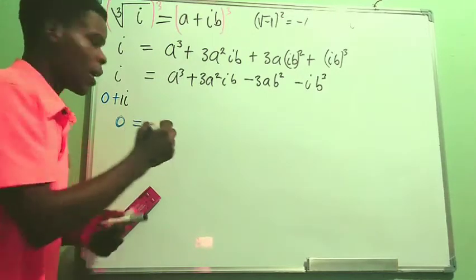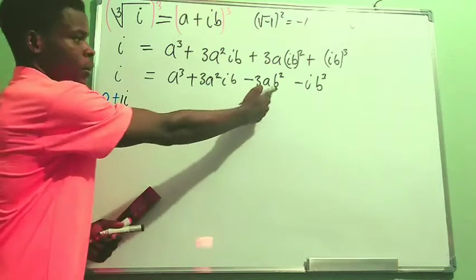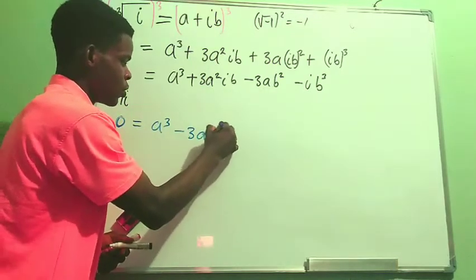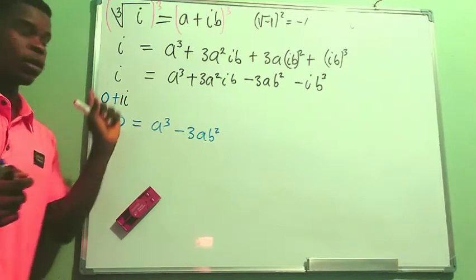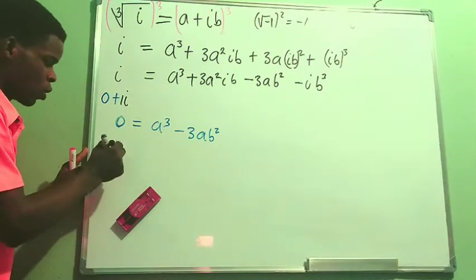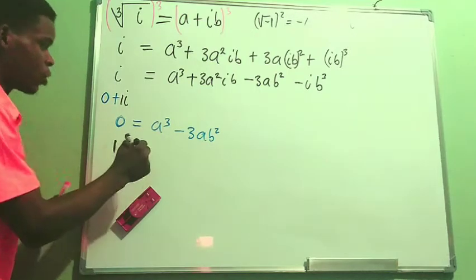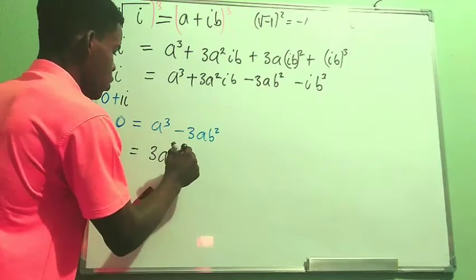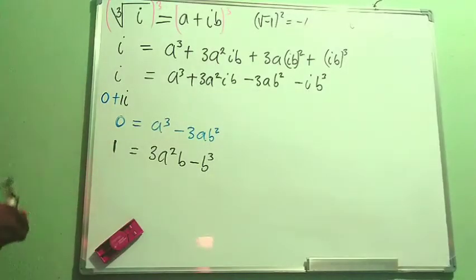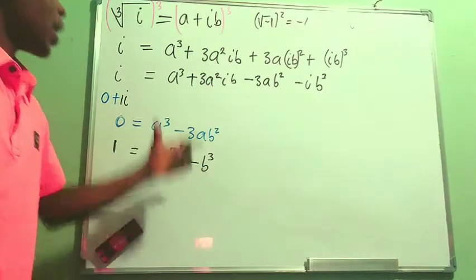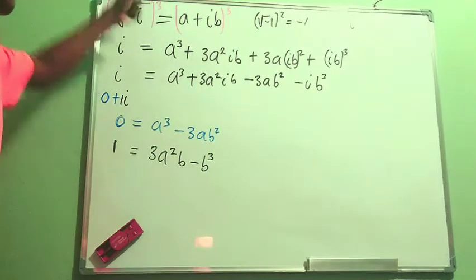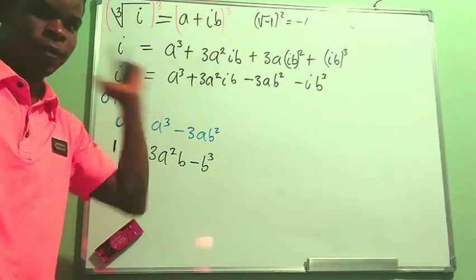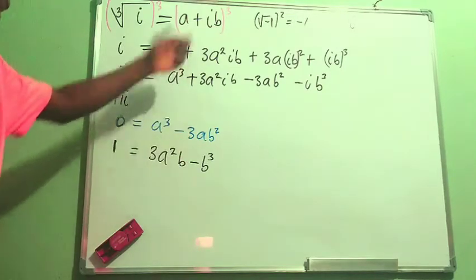Equating real parts: 0 = a³ − 3ab². This is equation one. Equating imaginary parts: 1 = 3a²b − b³. This is equation two. We need to solve for the real values of a and b, since a is the real part and b is the imaginary part of the complex number a + ib.